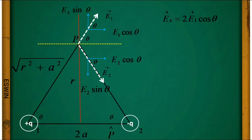The value of the electric field is (1/4πε₀) · q/(r² + a²). From the diagram, cos θ = a / √(r² + a²). Substituting these values into the equation gives us the result.